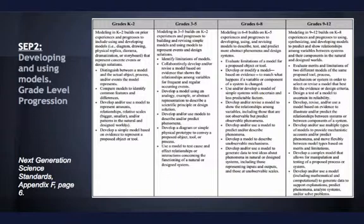Students in grades 6-8 progress to developing, using, and revising models to describe, test, and predict more abstract phenomena and to design systems. Throughout grades 9-12, students incorporate analyzing variables to predict and show relationships between components of natural and design systems.